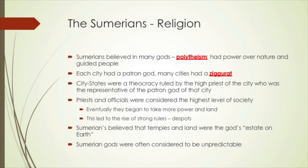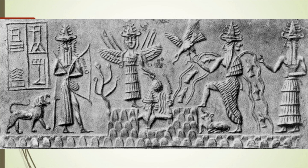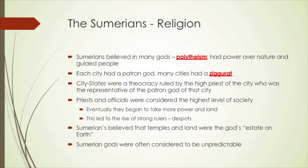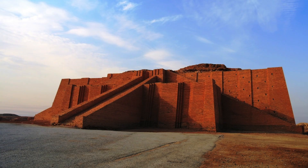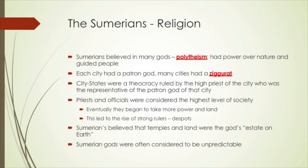Sumerian religion became the basis for many of the other religions that would come later within the Mesopotamian region. Sumerians believed in many gods — called polytheism — and they believed these gods had power over nature and could guide people. Each city-state in the Sumerian area had a patron god, and many cities had a ziggurat, or temple, to that god. The city-states were a theocracy, ruled by a high priest who was considered to be the representative of the patron god of that city.